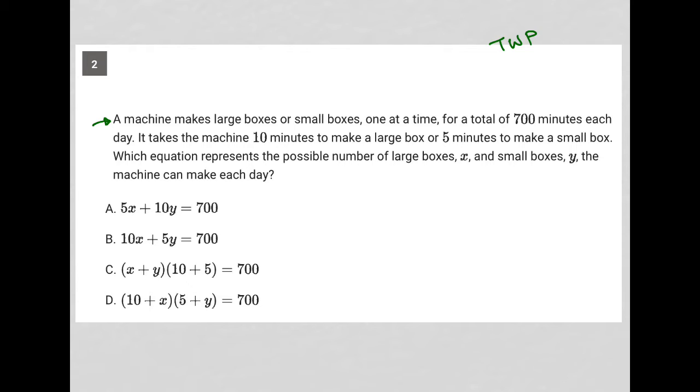The first sentence here says a machine makes large boxes or small boxes one at a time for a total of 700 minutes. So that's my first bit of quantitative information each day. So 700 minutes per day, I'll write down.